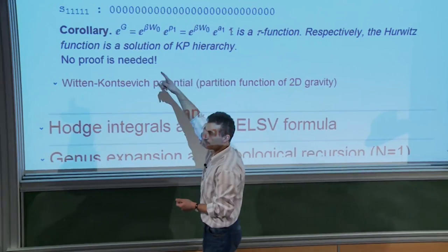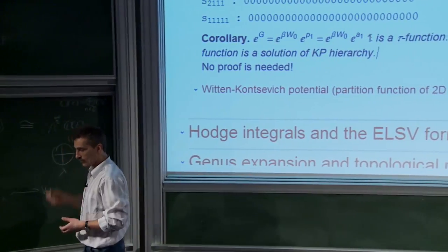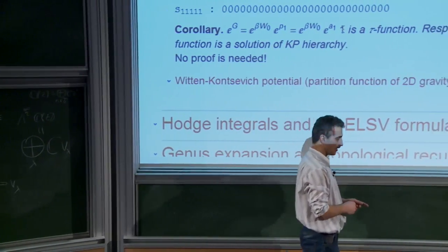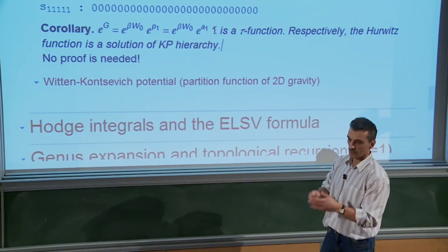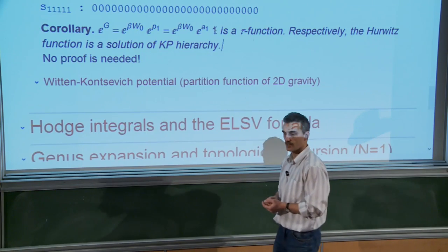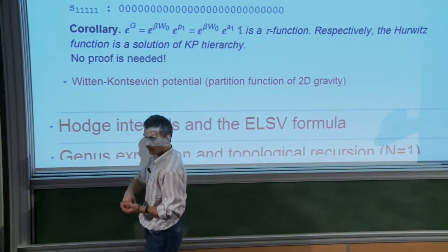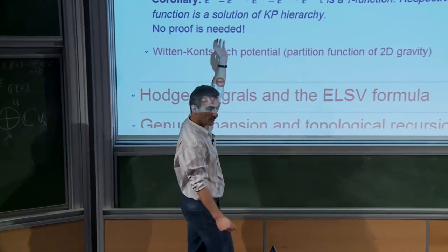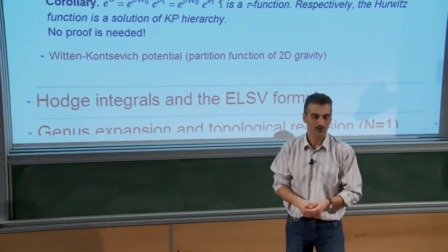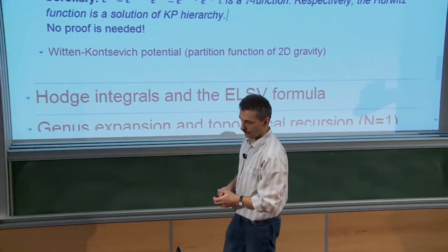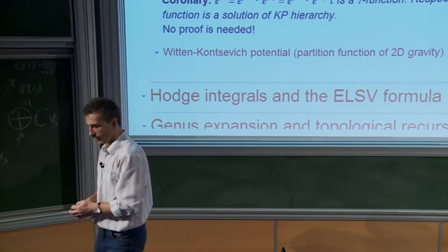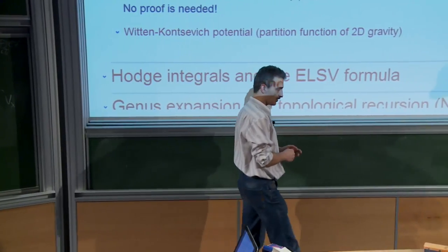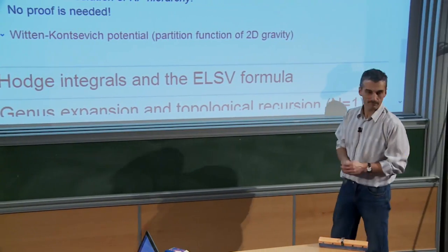The coefficients of this function have a special meaning for the combinatorics of Hurwitz numbers, but the fact that it is a solution of the KP hierarchy is much more elementary. It is not something specific to Hurwitz numbers — it is a very general property. You can substitute other operators and produce many other solutions, some with physical meaning and some with combinatorial meaning.